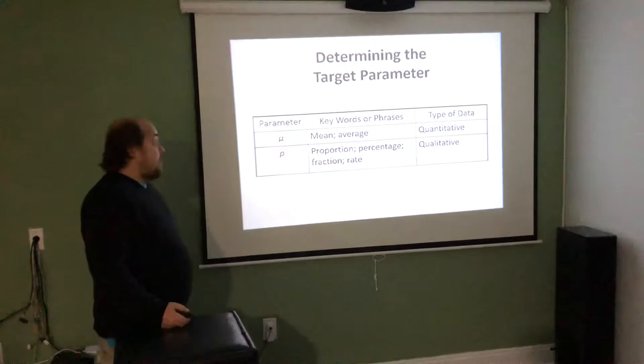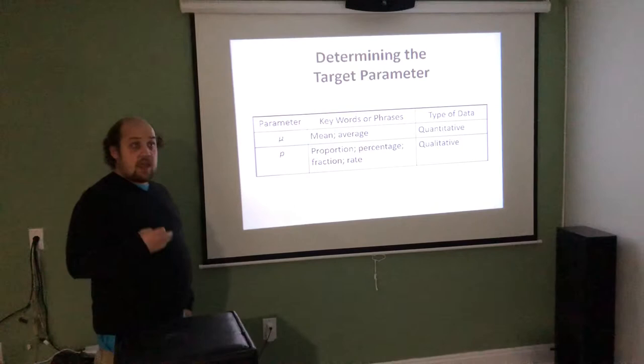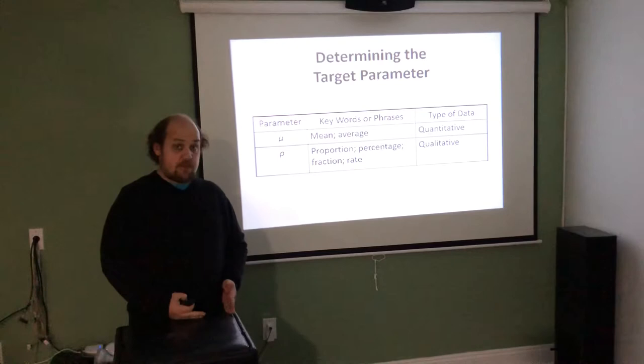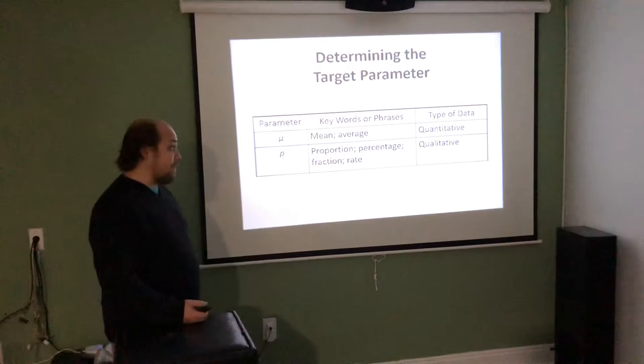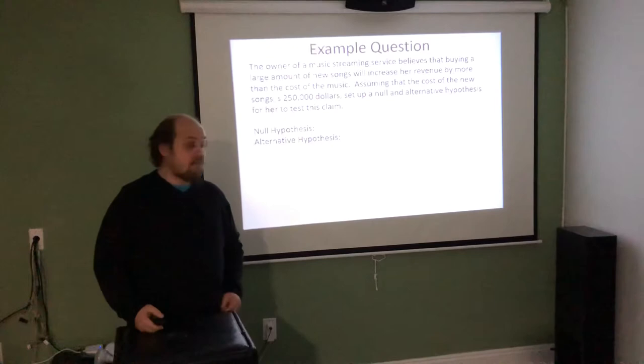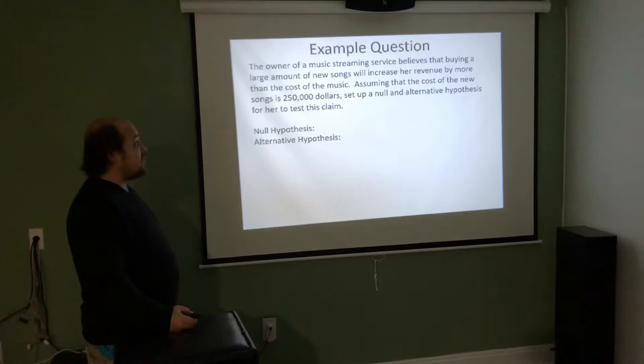The population parameter always goes in the null and alternative because we're trying to find information about the true population value, not the information we got from the sample. We're going to use the information from the sample to conclude something about the larger population, but whenever we're talking in terms of the null and alternative hypothesis, they should include the population parameters because they refer to the whole population.